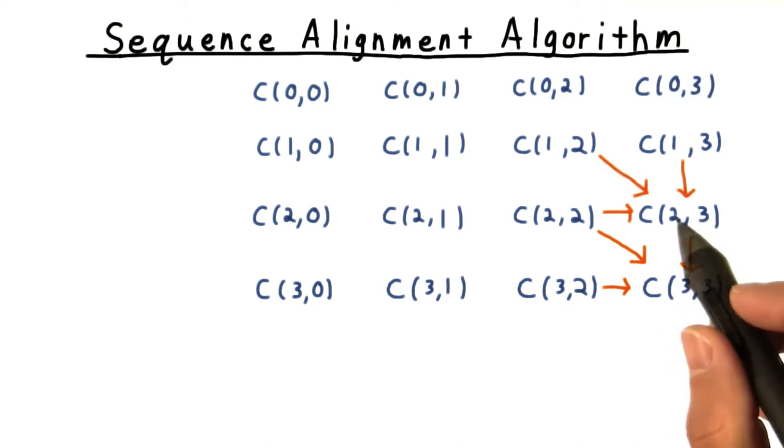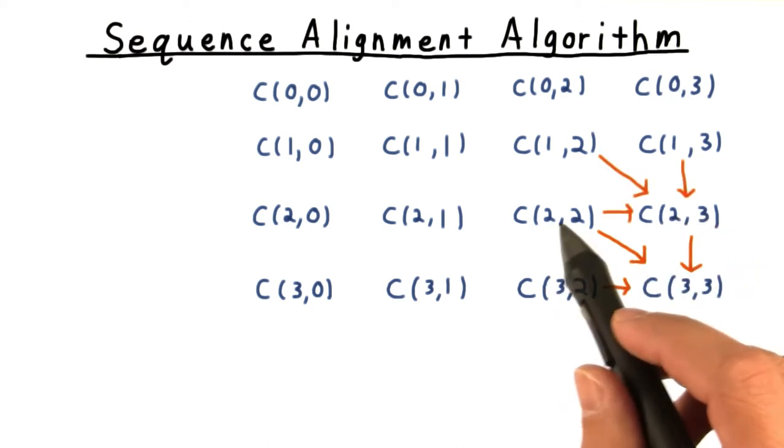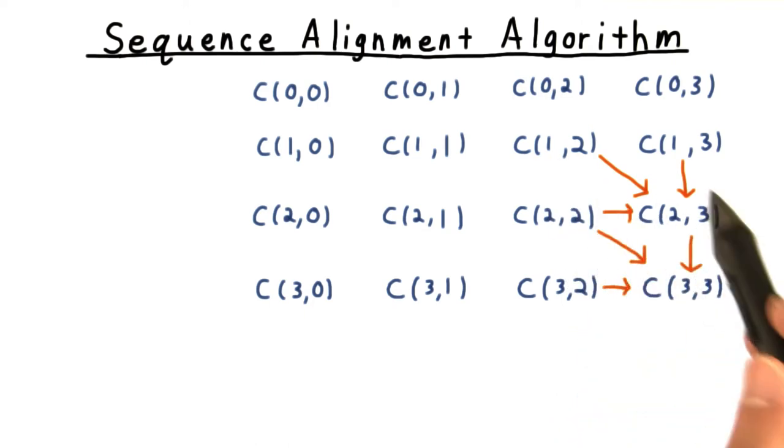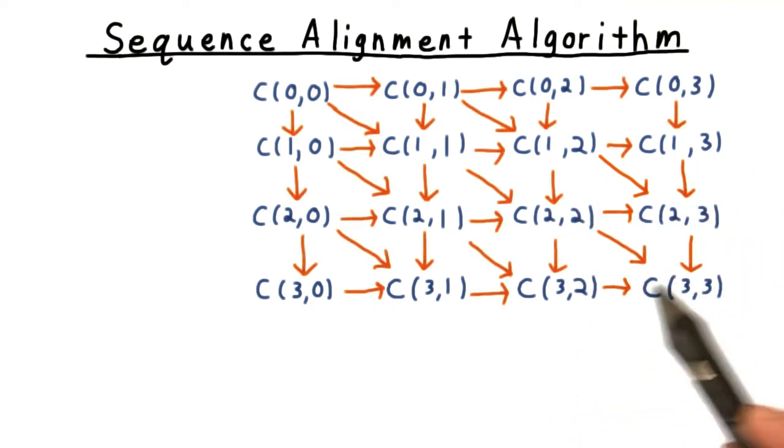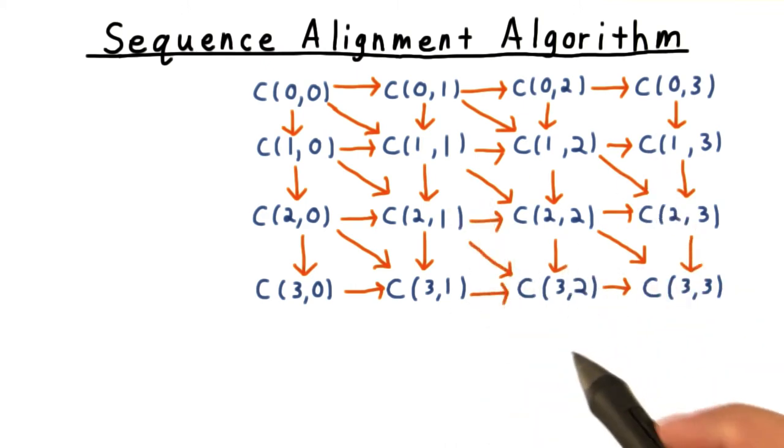Knowing C23 depends on knowing C22, C12, and C13. And indeed, in general, to figure out any cost, we need to know the costs to the west, to the northwest, and to the north to fill out this grid.